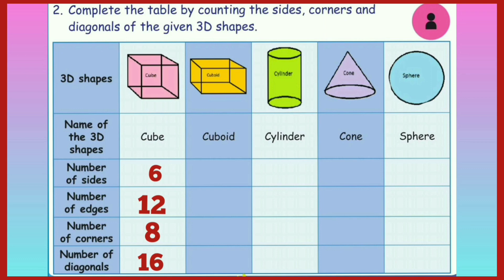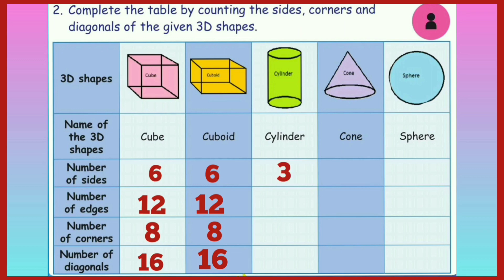Next, cuboid. A cuboid has the same properties as a cube: 6 sides, 12 edges, 8 corners and 16 diagonals. Next, cylinder. A cylinder has 3 sides. It has no edges, no corners and no diagonals.